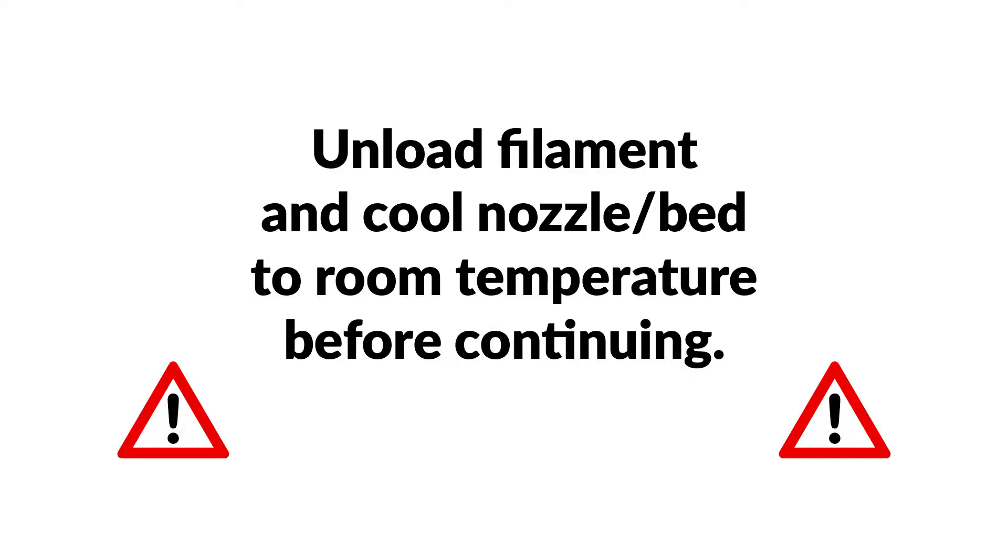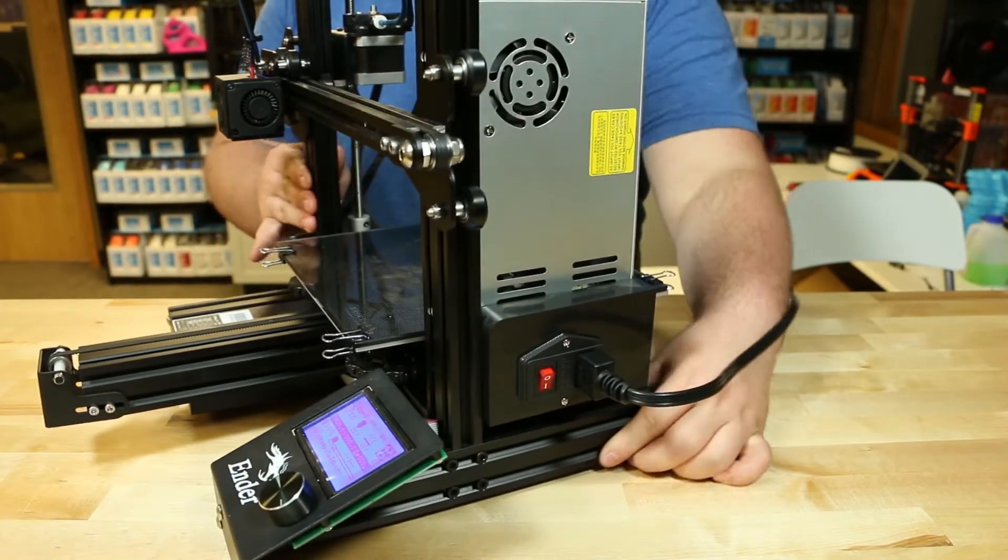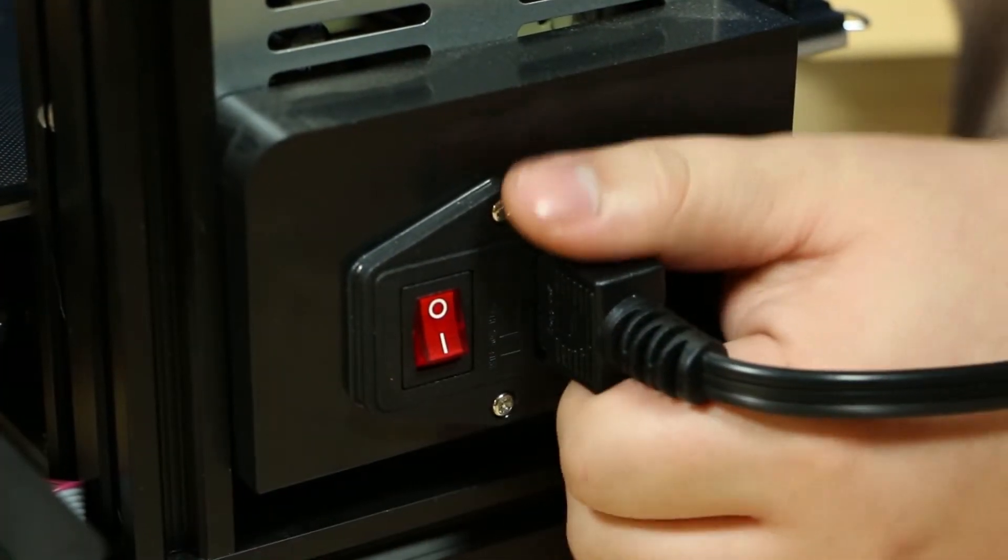Finally, you will need your filament unloaded from the Ender 3 printer hot end and the bed cooled to room temperature before you begin. First, make sure that your power is turned off and the power cable is unplugged.